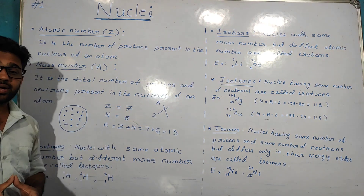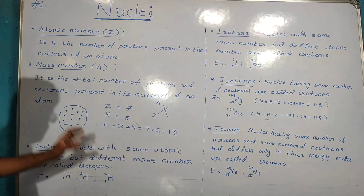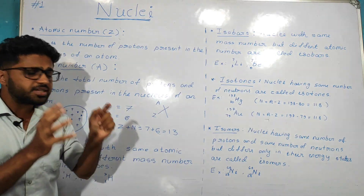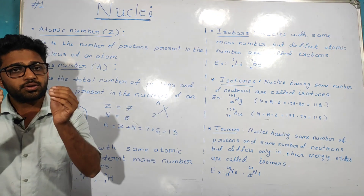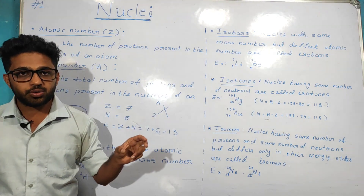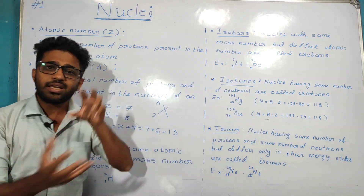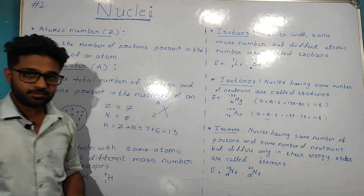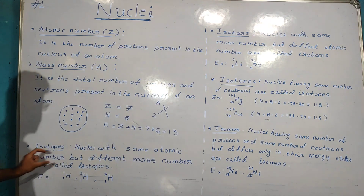Isotopes — this is the definition: nuclei with the same atomic number but different mass number are called isotopes. Note that nucleus is singular and nuclei is plural — nuclei refers to a collection of nucleus.